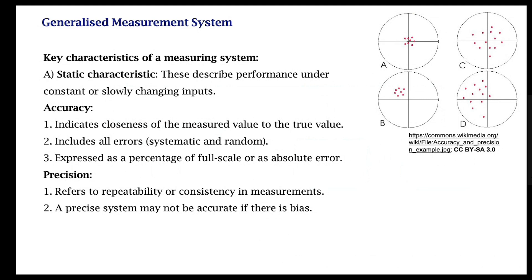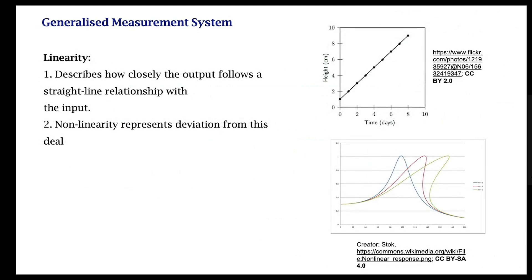Accuracy and precision are related but distinct concepts. Then there is linearity. If I systematically change the input and measure the output, plotting the input-output relationship should give a straight line. A straight line is important because it makes it easy to predict future output values for an unknown input.